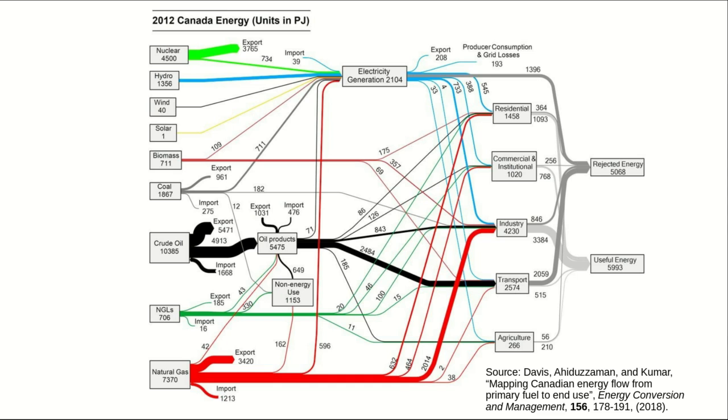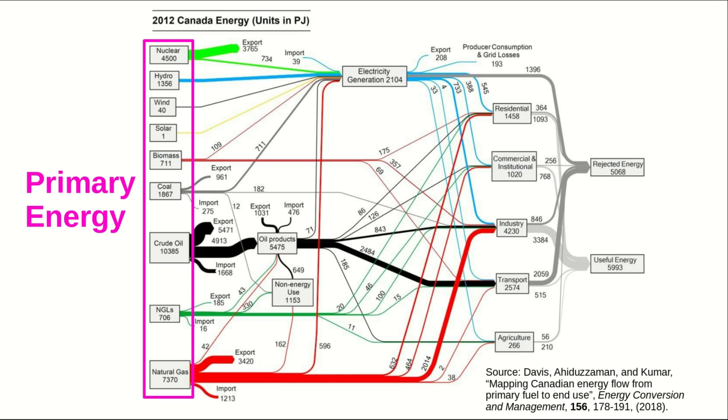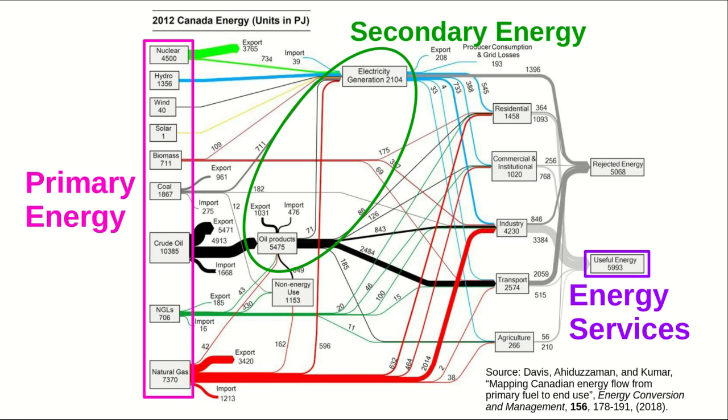A Sankey diagram shows flows or transfers with the amount transferred represented as the thickness of a line. Notice the way it's laid out. All across the left side are primary energy sources and then through the middle there are secondary energy and in the end there are many uses: residential, commercial, institutional, industry, transport and so on, but the only part that's the energy services is what we call the useful energy used in each of those areas.